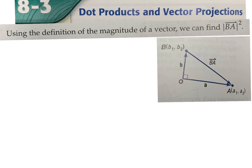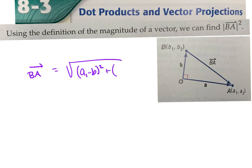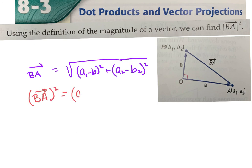If you look in the book, they use the concept of finding vector BA using the Pythagorean theorem, where you subtract the X values and square them, then add the squared difference of the Y values. When you square both sides, you get that value squared. I'm just showing you where we get it from.